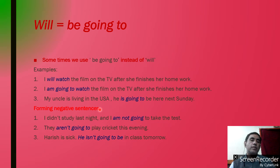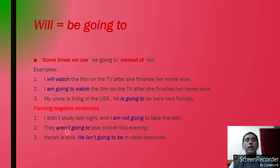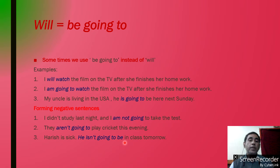Forming negative sentences. 'I didn't study last night, and I am not going to take the test.' As I didn't study last night, I won't take the exam — here we can use 'I won't' also. 'They aren't going to play cricket this evening' — we can convey the same sentence as 'They won't play.' Another example: 'Harish is sick. He isn't going to be in class tomorrow.' The same sentence another way: 'Harish is sick. He won't be in the class tomorrow.'